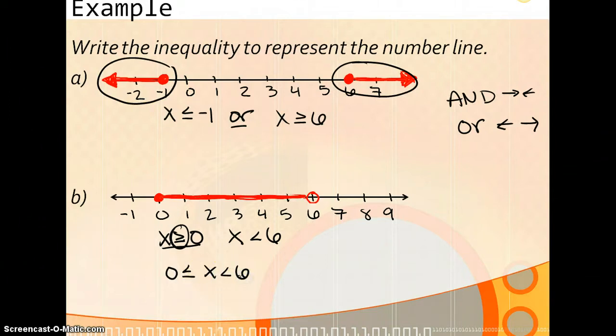It is pretty straightforward if you understand how to write the OR versus the AND. ORs are always written as two separate inequalities, while an AND would be written as one long one.